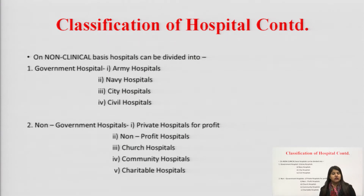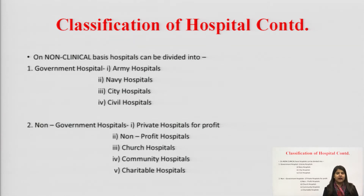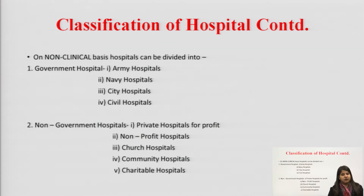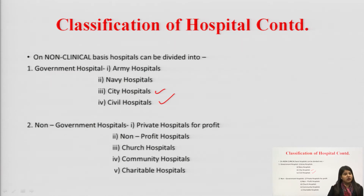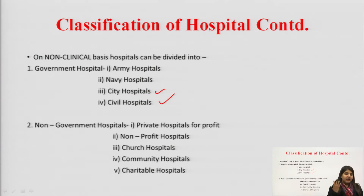On a non-clinical basis, hospitals can be classified as government hospitals and non-government hospitals. Government hospitals include army hospitals, navy hospitals, city hospitals, and civil hospitals. Army and navy hospitals prioritize treating army and navy personnel first, then the general population. Non-government hospitals include private hospitals for profit, and non-profit hospitals which donate their earnings to charity.